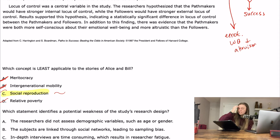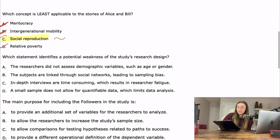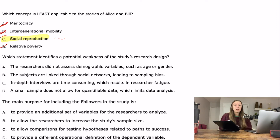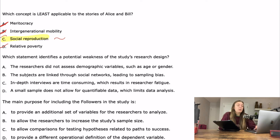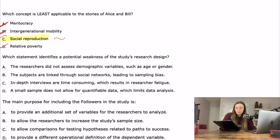Second question: which statement identifies a potential weakness of the study's research design? Again, psych soc is where you're going to get your research methods questions. Which one of these is going to be a weakness of what they did in the passage?